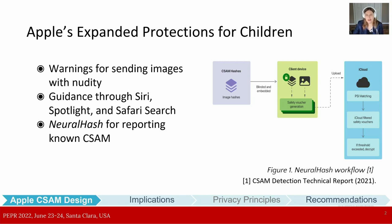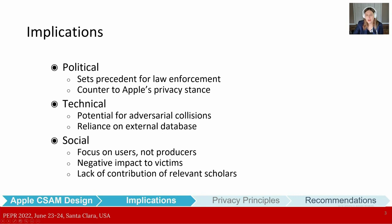Apple's child protection solutions have come under scrutiny due to political, technical, and social implications. From a political perspective, researchers have expressed concern around the neural hash algorithm in that it breaks the privacy stance that Apple has championed for years. Additionally, it sets a precedent for future collaborations with government agencies. From a technical perspective, researchers and practitioners are concerned about breaking of end-to-end encryption, modification of the existing database, and potential for adversarial collisions with the hashes from the database.